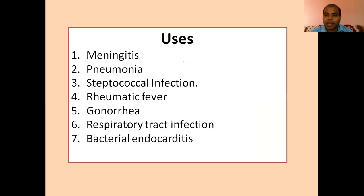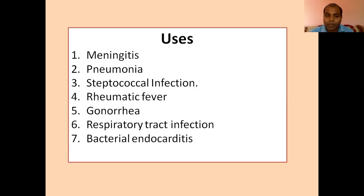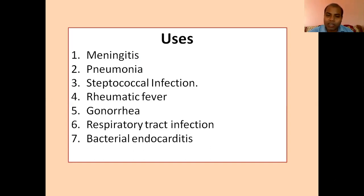In terms of uses, ampicillin is used like other penicillins — mostly for gram positive bacterial infections, and along with that some gram negative bacterial infections as well. These include meningitis, streptococcal infections, pneumonia, other streptococcal infections, rheumatic fever, bacterial inflammation, gonorrhea caused by Neisseria gonorrhoeae, respiratory tract infections, and endocarditis.